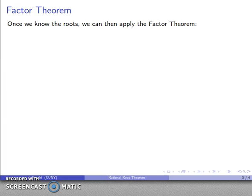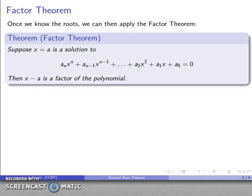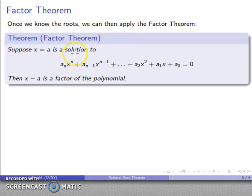Once I have those roots I can apply something called the factor theorem. If I find a solution to this polynomial equal to zero, I also have a factor. You might have been taught that when given a polynomial equation you factor to find the solutions — but that's really the worst way of doing it. The factor theorem tells us that you solve the equation to find the factors, not the other way around, because factoring in general is going to be too difficult.